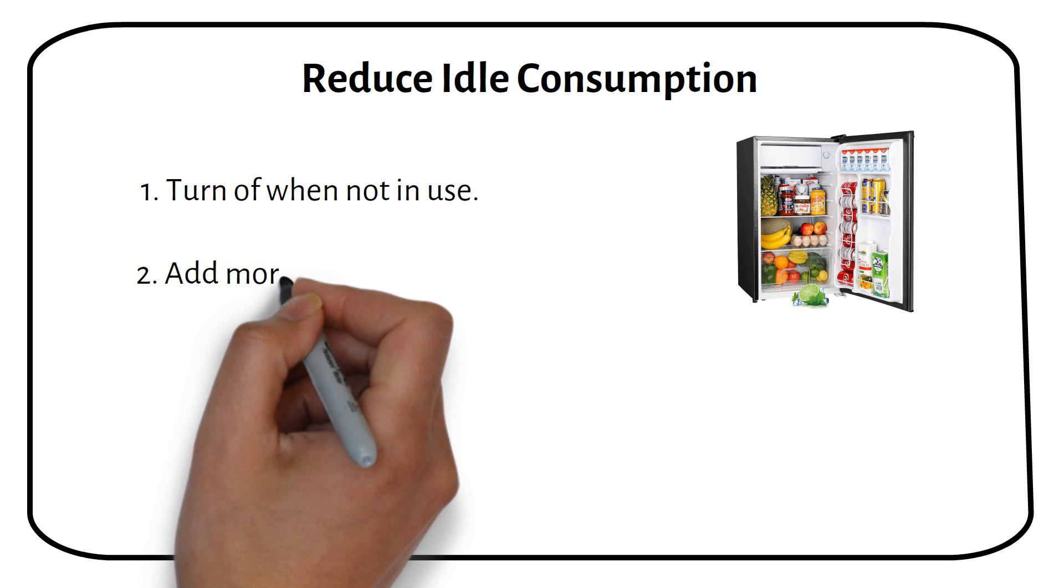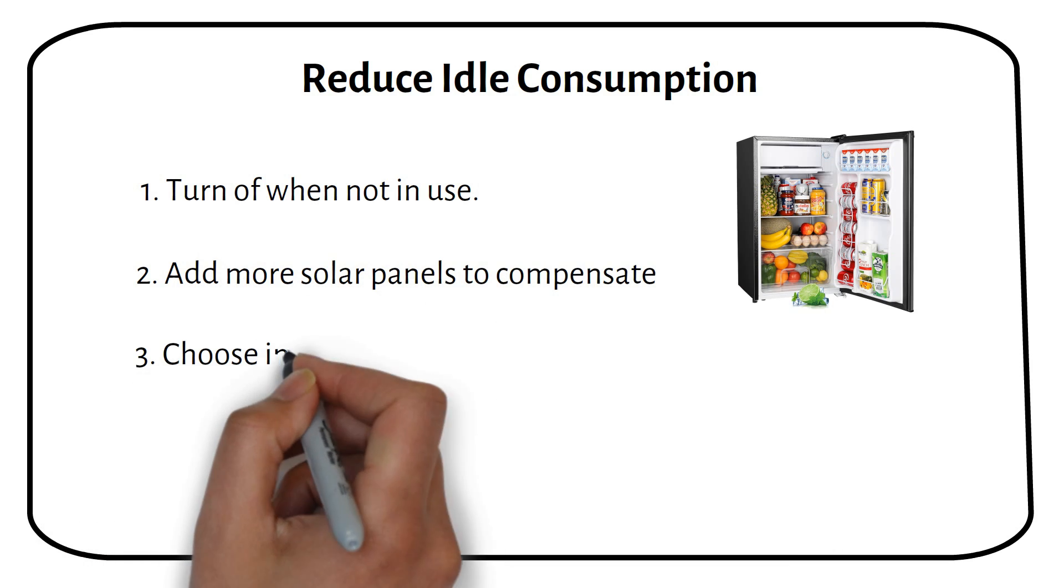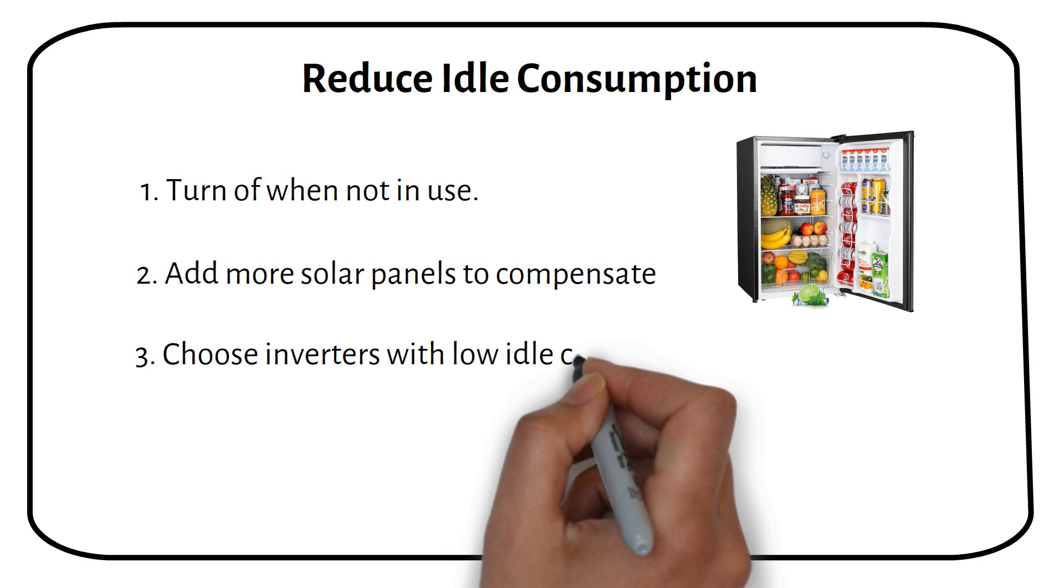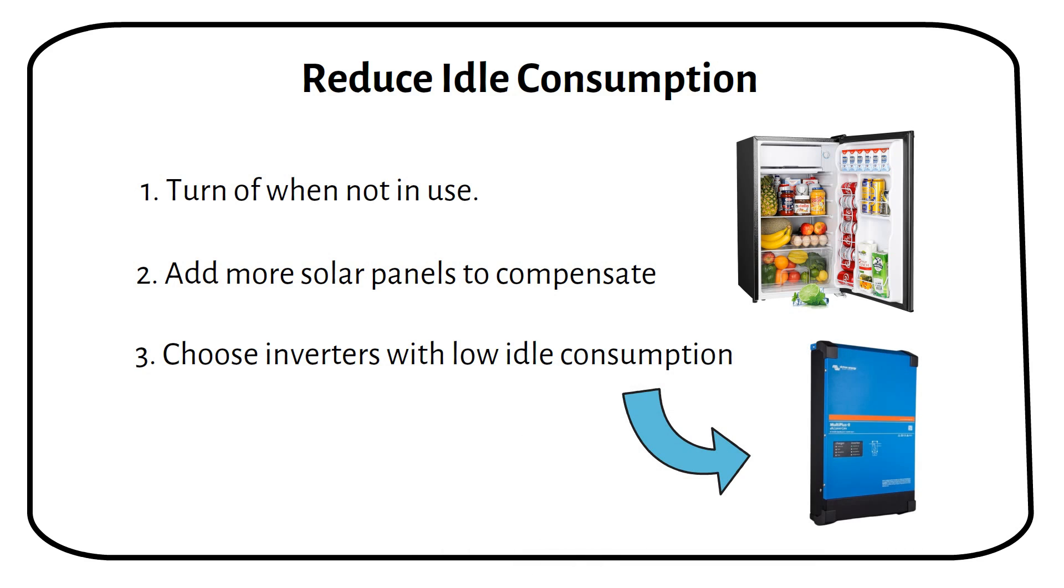The best option is to add more solar panels to compensate. Choosing inverters or inverter chargers with low idle consumption, like the Victron Multiplus series, can also help reduce idle power consumption. These have the lowest idle power consumption, but are also more expensive.